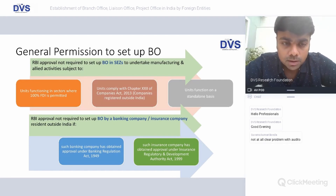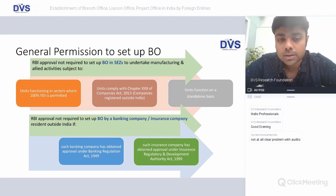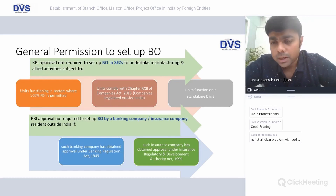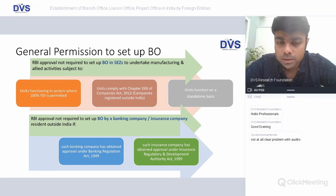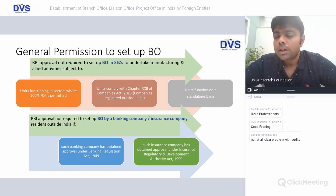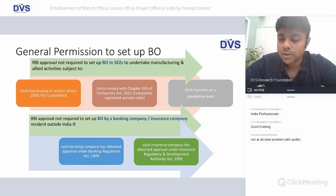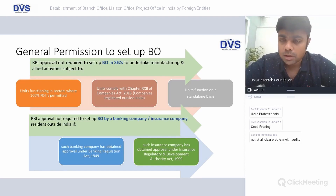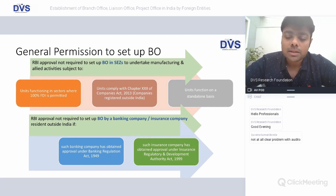RBI approval is also not required to set up a branch office by a banking company or insurance company if the company has obtained approval under the Banking Regulation Act, or if the insurance company has obtained approval under IRDA regulations. The intent of the government is not to burden a person willing to do business in India by adding another layer of RBI compliance — where the respective ministries or government have already approved investment in sectors like telecom or defence, further approval from RBI is dispensed with.